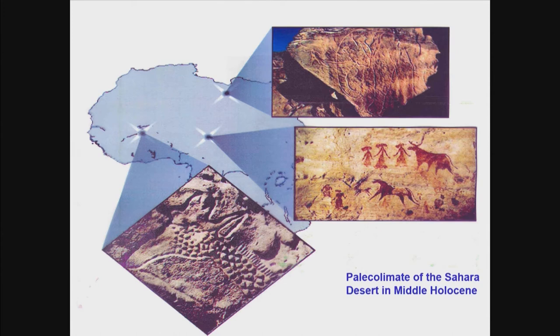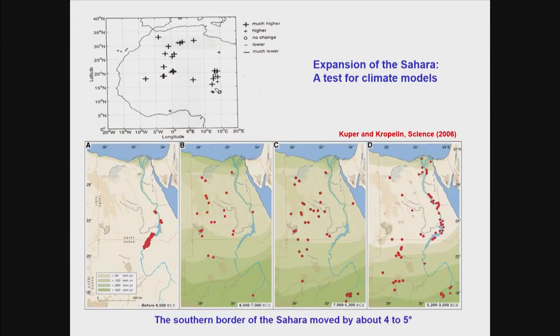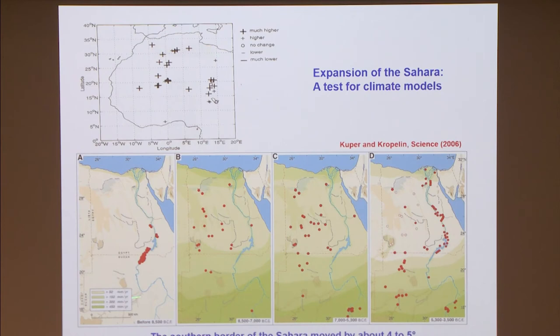This theoretical concept has some basis in observations, but you have to go back thousands of years. The Sahara Desert had a paleoclimate that looks very different from what we have now. During the Middle Holocene, the Sahara was much wetter than it is today. There is evidence from lake levels at different data points across the Sahara, and also evidence from human settlements, that the climate of this region fluctuated at timescales of thousands of years. The latest transition was an expansion of the desert that happened around 6,000 years ago — the desert expanded by about four to five degrees north.